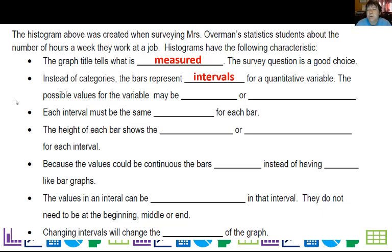Instead of categories, the bars represent intervals for a quantitative variable. And the possible values could be discrete or continuous. Each interval must have the same width or it's going to be misleading. And the height of the bar is going to show either the frequency or the relative frequency, just like bar graphs.